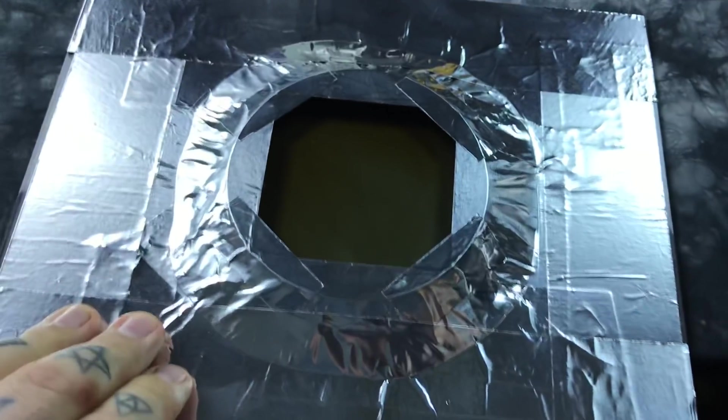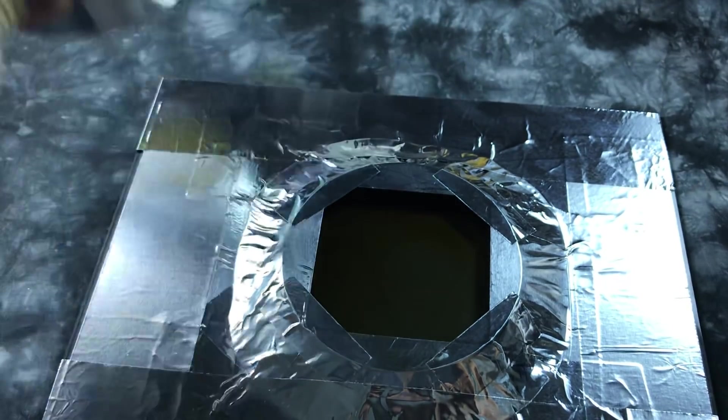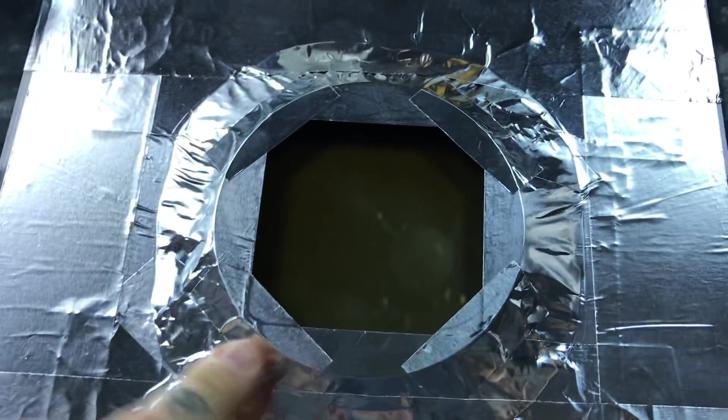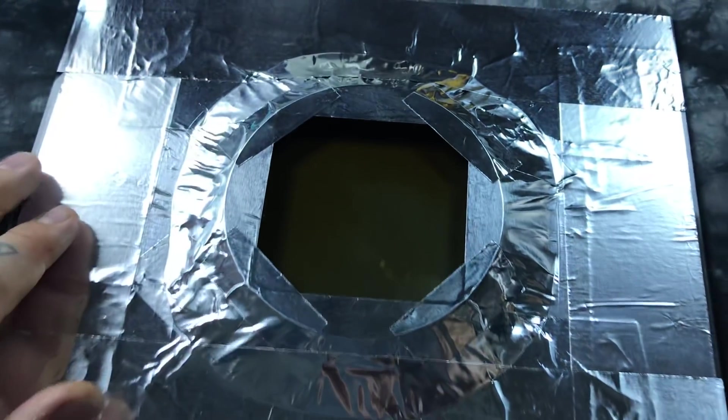And what I did is I actually placed it here, used this 3M ducting tape. It's actually made out of real aluminum. Peeled the backing off, I set it in place, and then covered it so there's no light coming in.